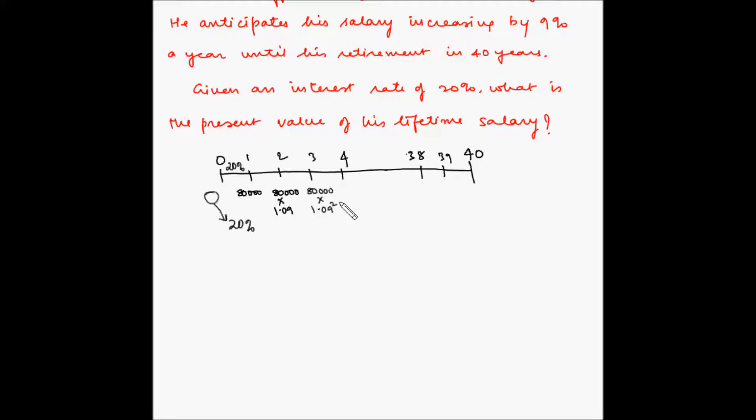So this becomes a growing annuity because the annuity amounts are growing at a constant rate. So present value of a growing annuity is equal to A divided by (i minus g) into bracket [1 minus (1 plus g divided by 1 plus i) to the power n].